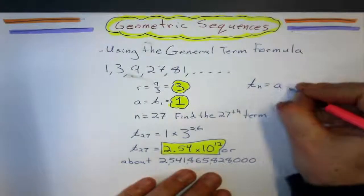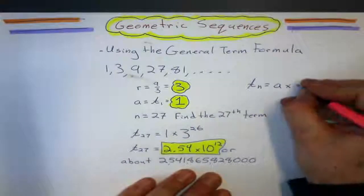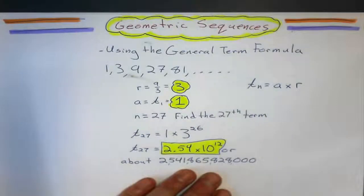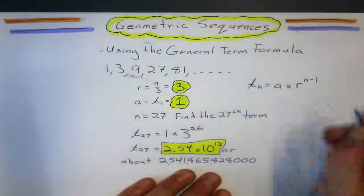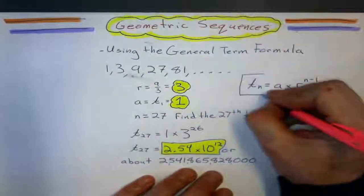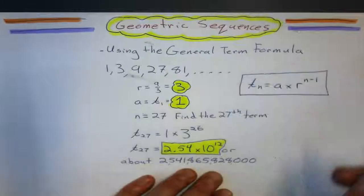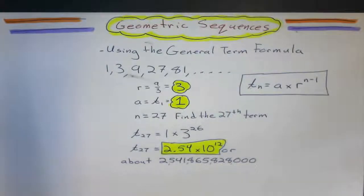My general formula will be the first term, a, times the common ratio to the power of one less than n. Now, hopefully that makes some sense.